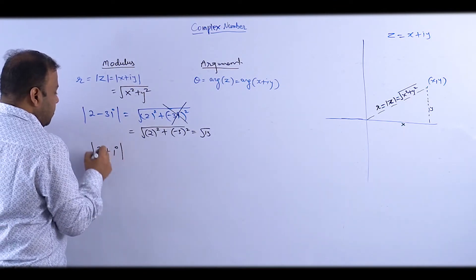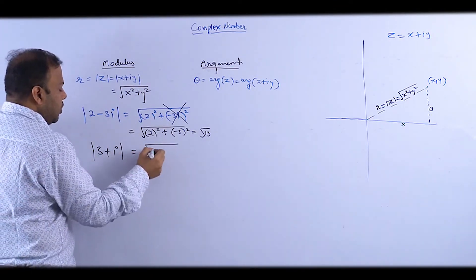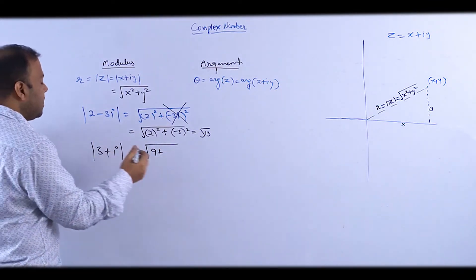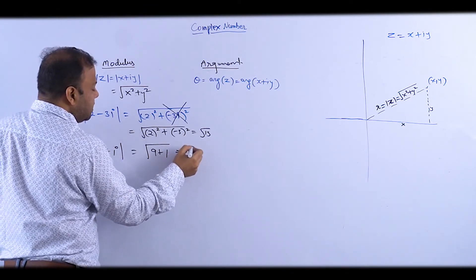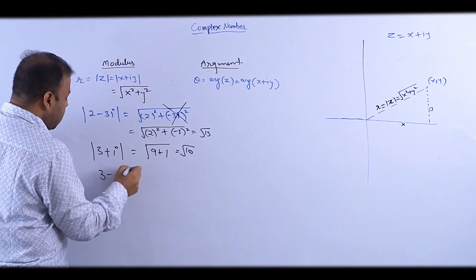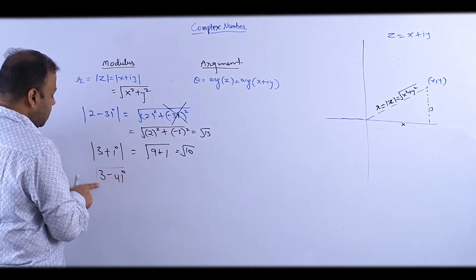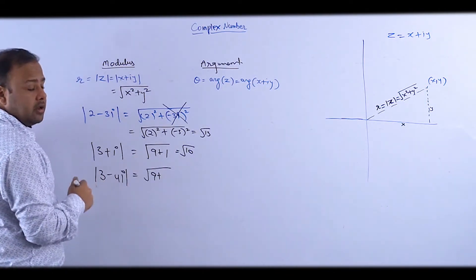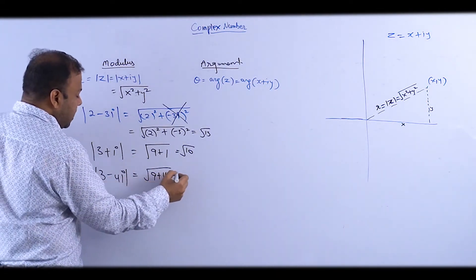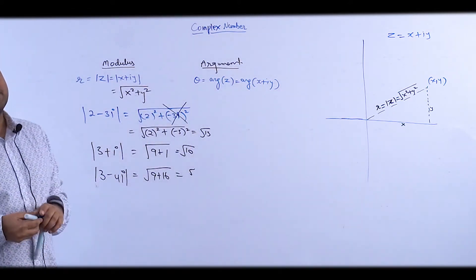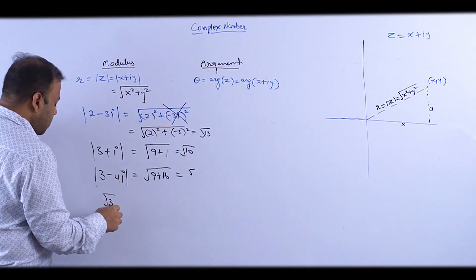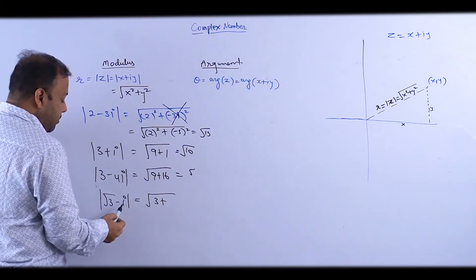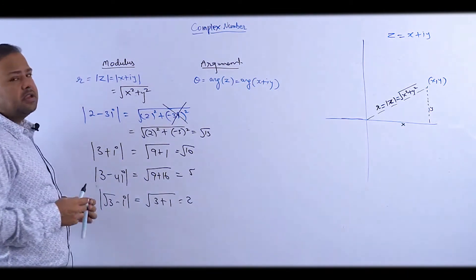Mod of 3+i: √(3²+1²) = √(9+1) = √10. Mod of 3−4i: √(3²+(−4)²) = √(9+16) = √25 = 5. Mod of √3−i: √((√3)²+(−1)²) = √(3+1) = √4 = 2.